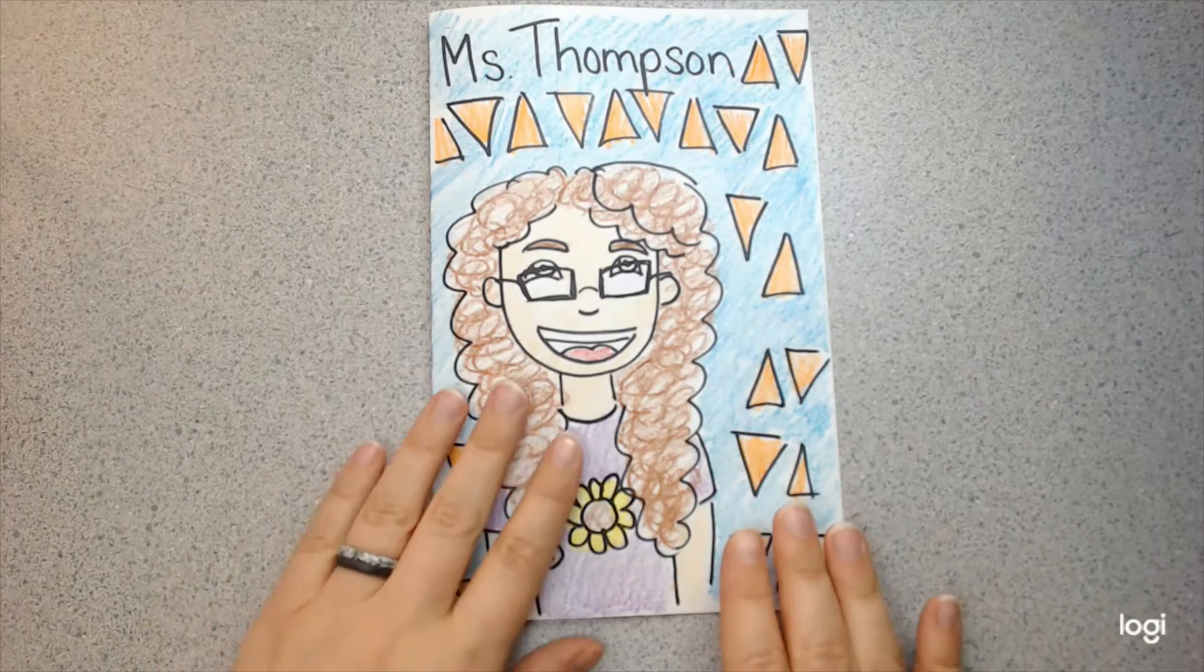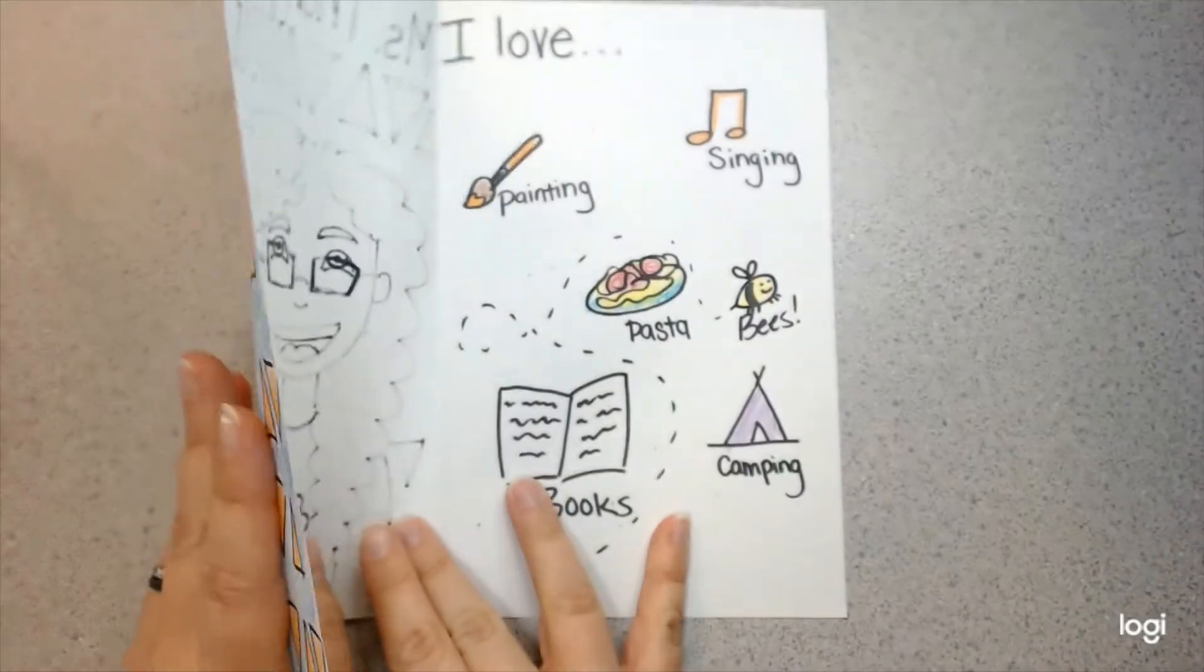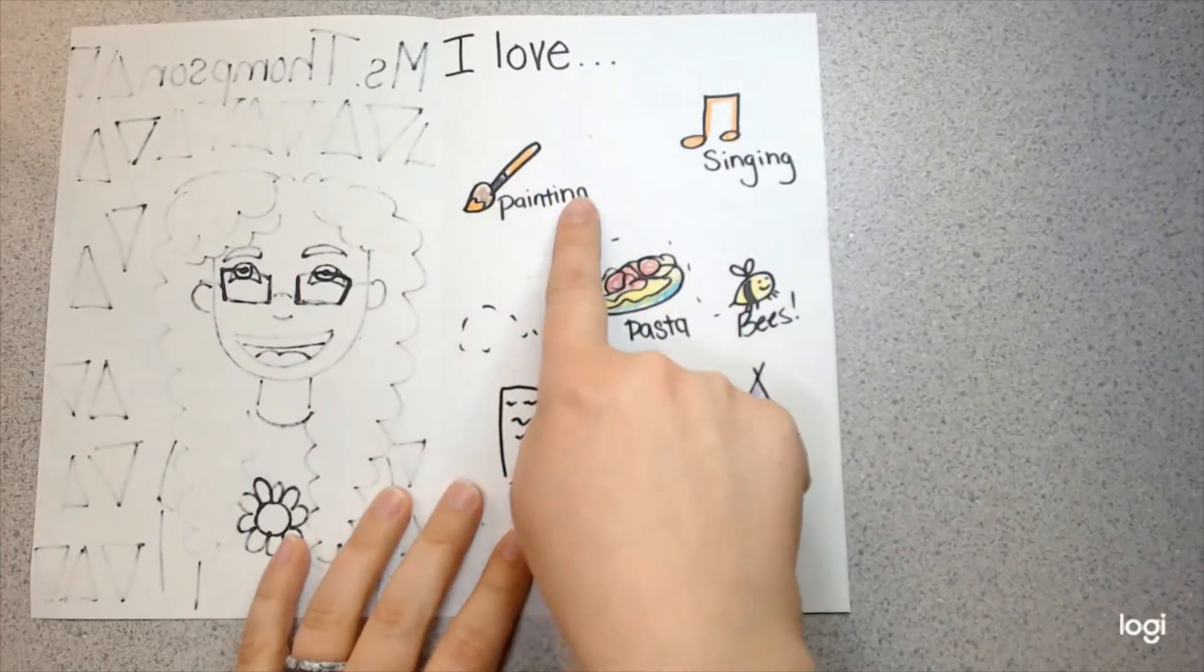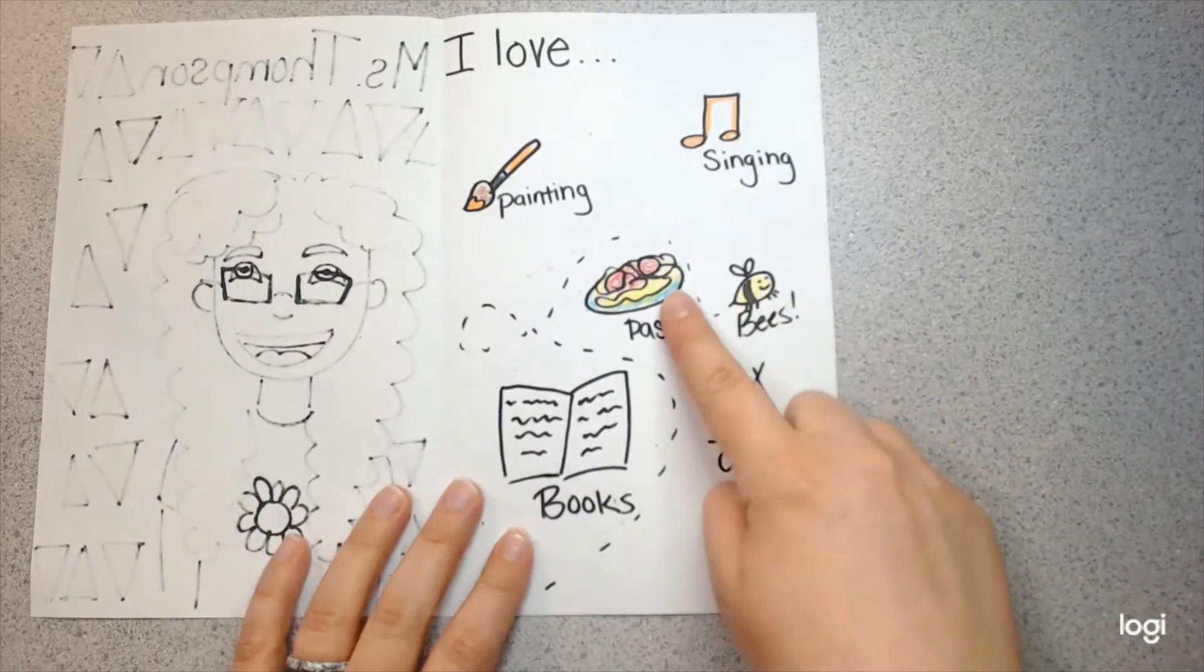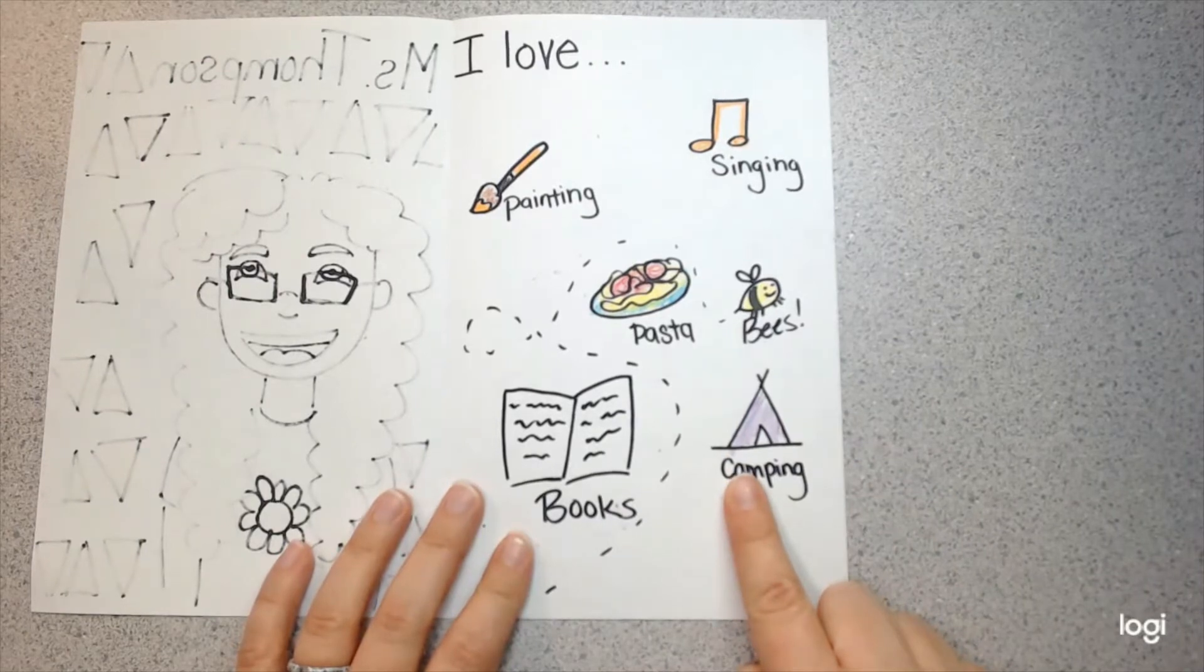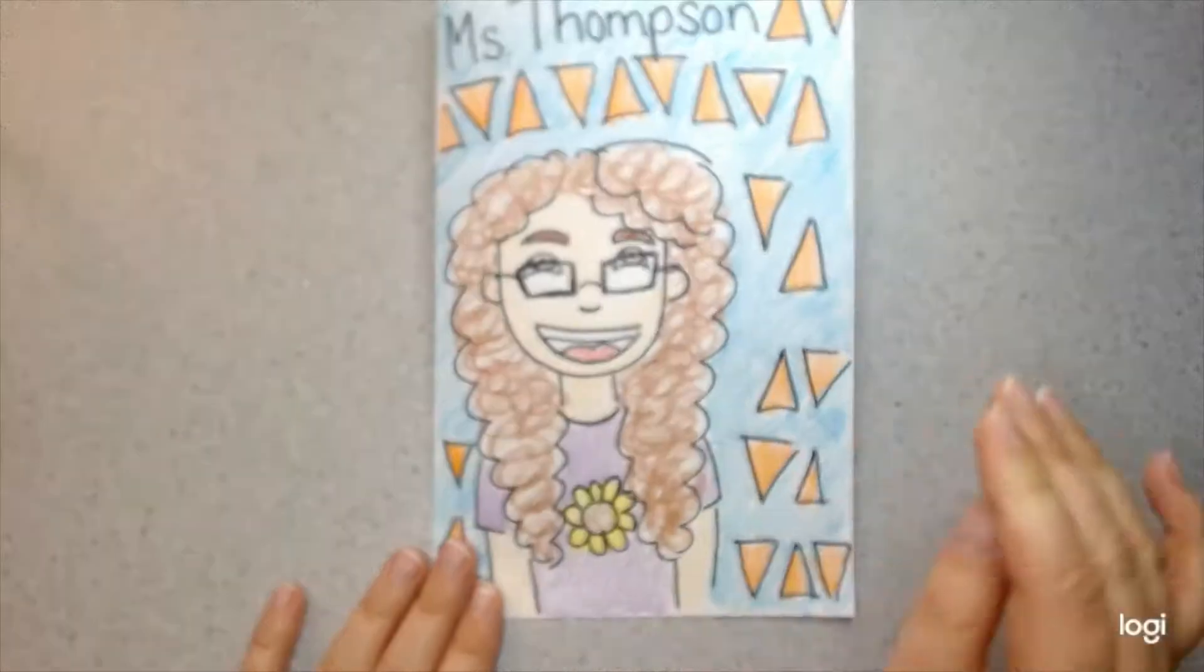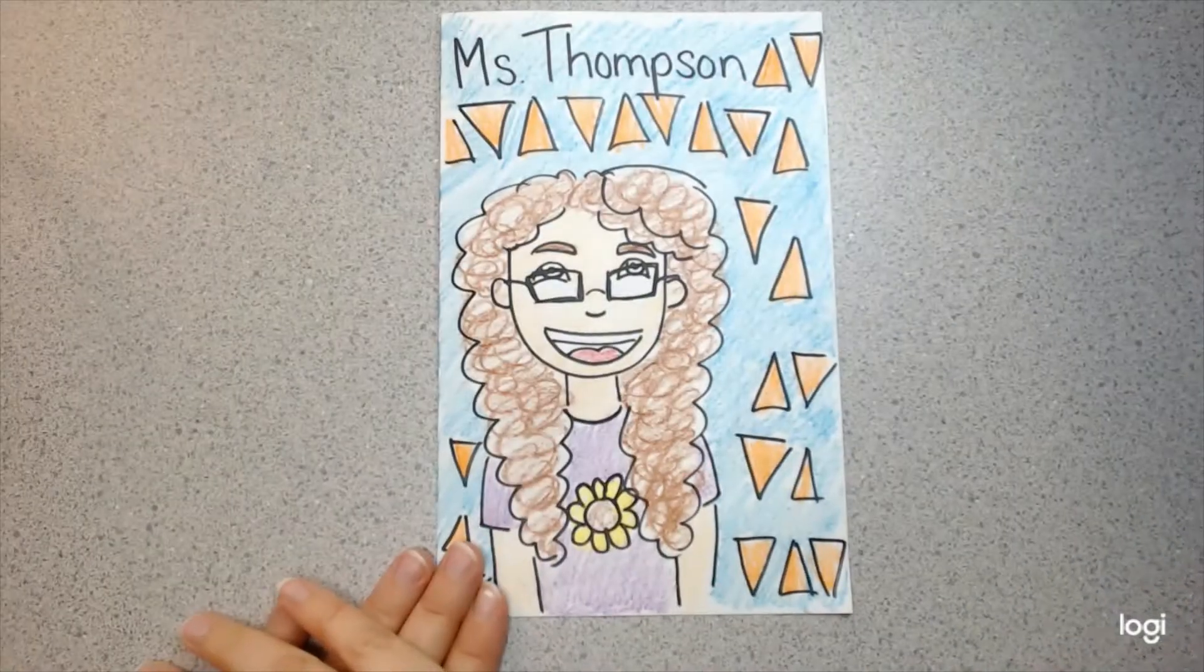Now, the sneaky thing is, on the inside, I'm going to tell you all about the things that I love. I love painting. I love singing. I love pasta and books and camping, but most of all, I love bees. Now, you are going to create your very own book so that I can get to know you better.